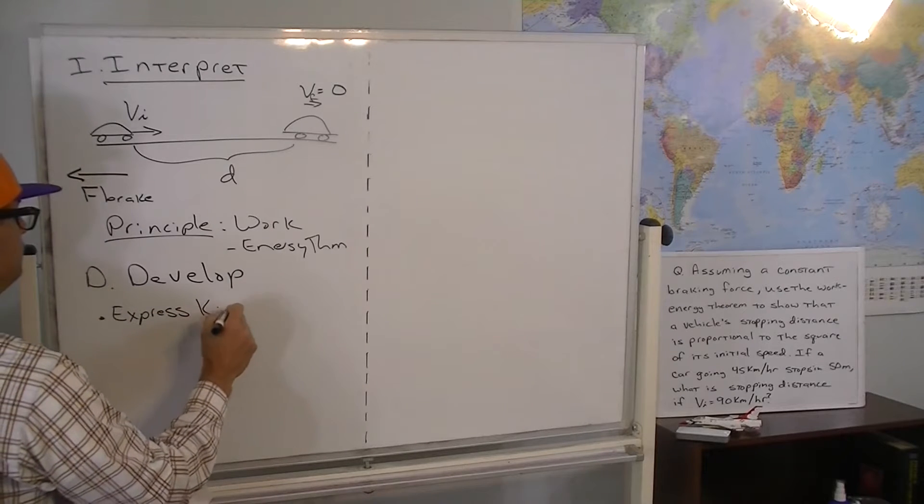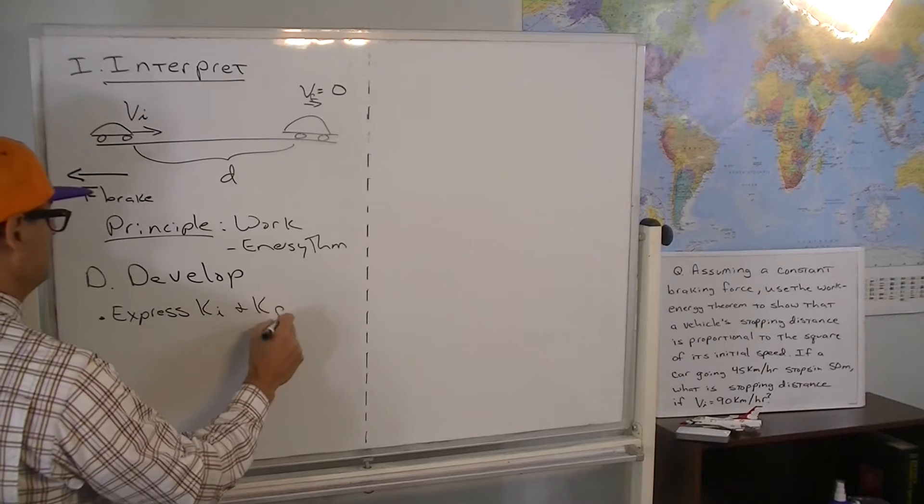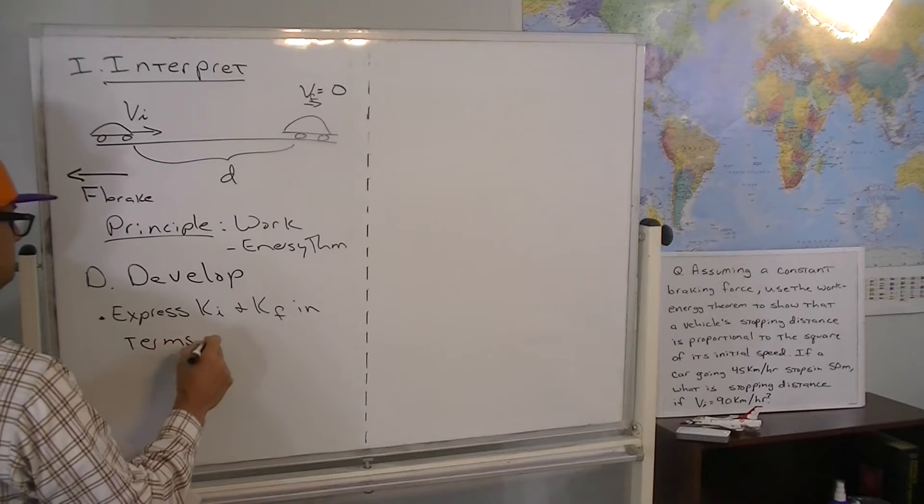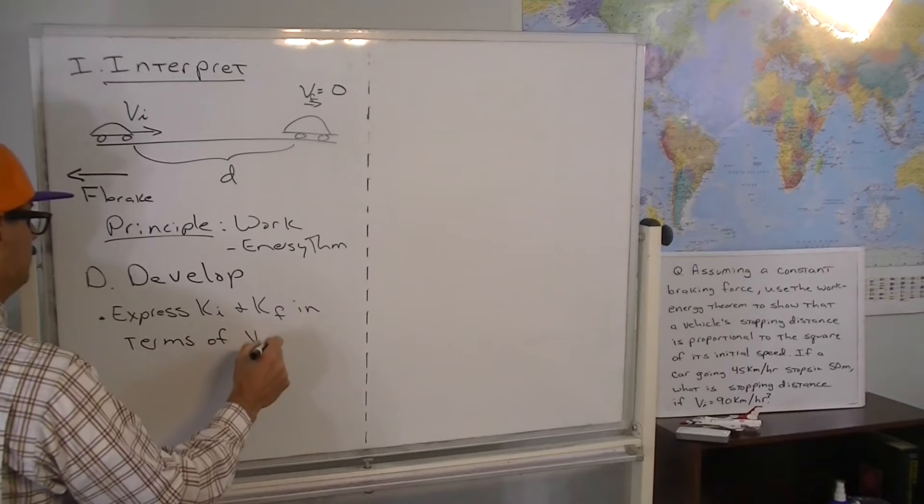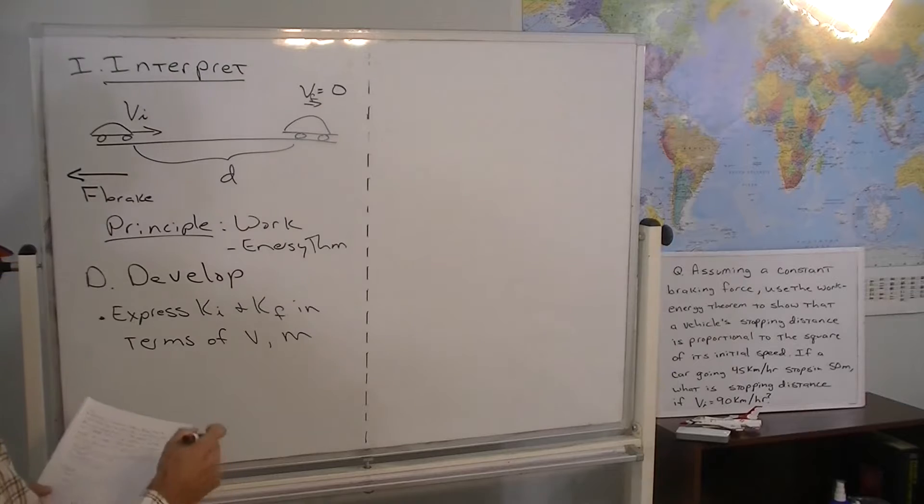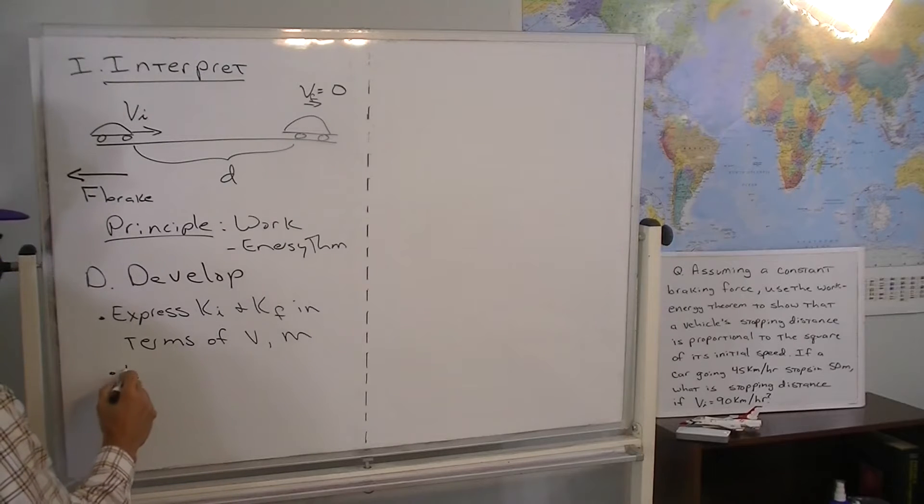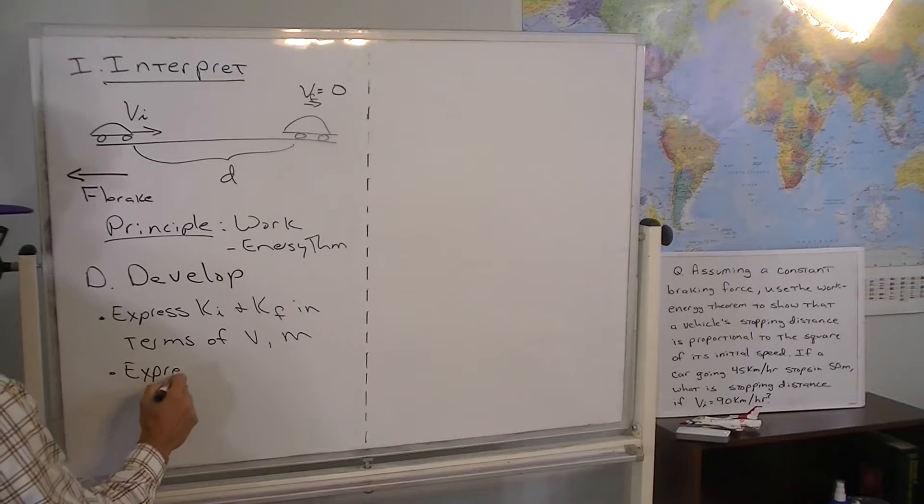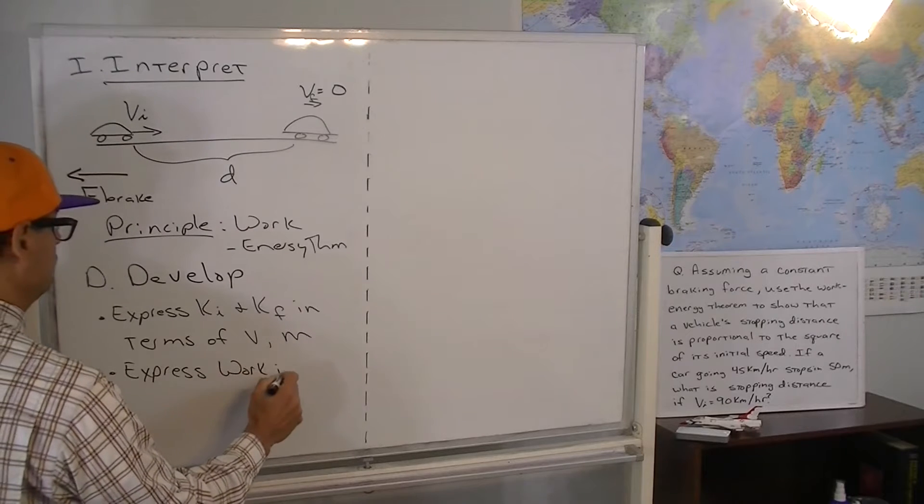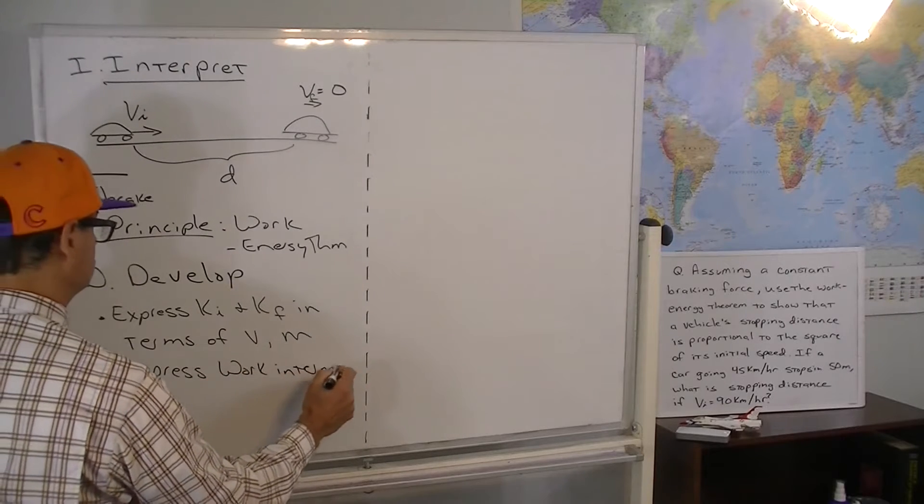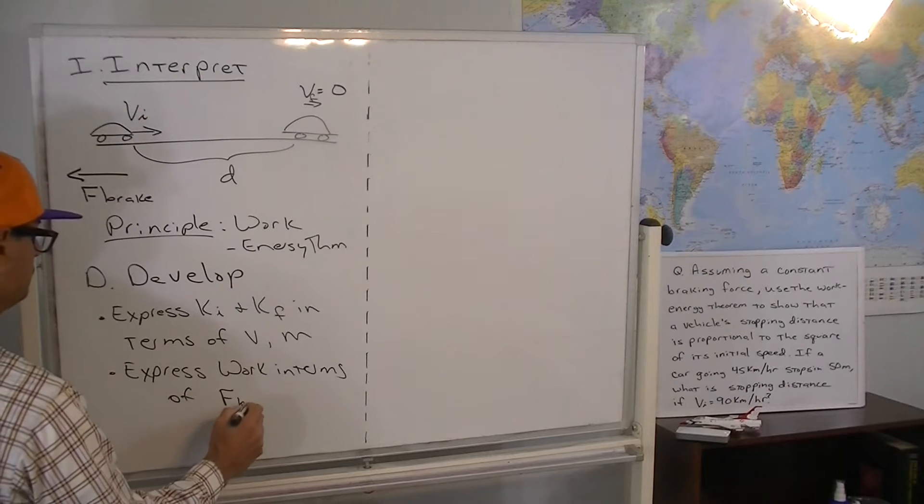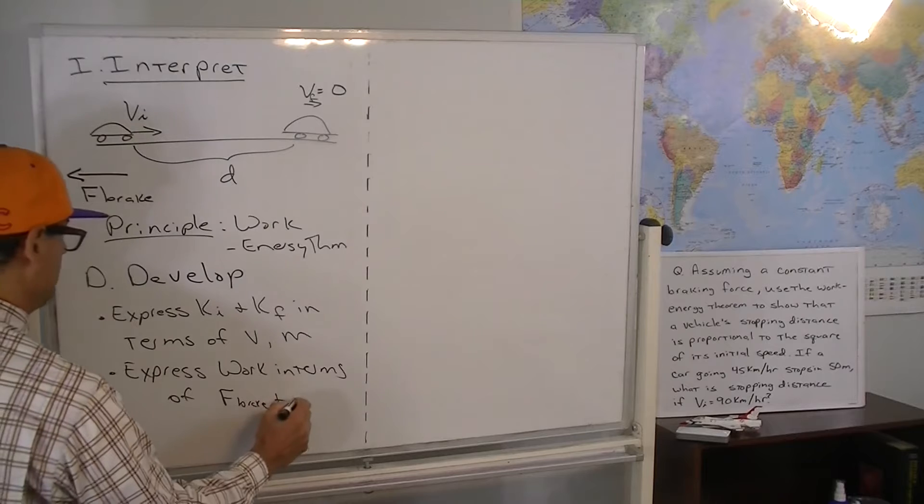the initial and the final kinetic energy in terms of the relevant speeds and the mass of the car. We want to express the work in terms of the braking force and the stopping distance.